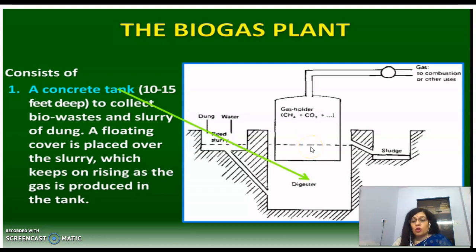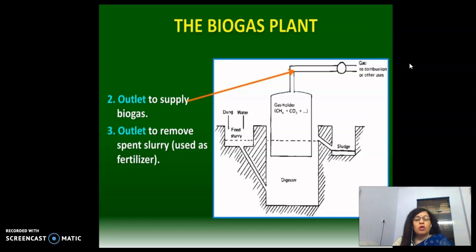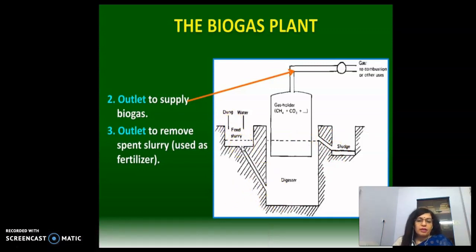In the biogas plant, there is continuous production of gas in the tank. At the top, there is a gas outlet where the biogas is collected and supplied for combustion and other purposes. There is also an outlet to remove the spent slurry, which is further used as fertilizer.